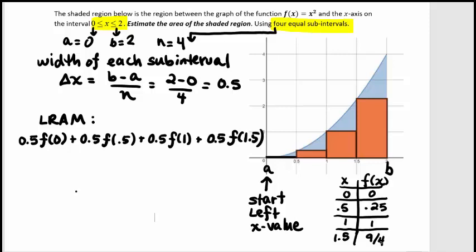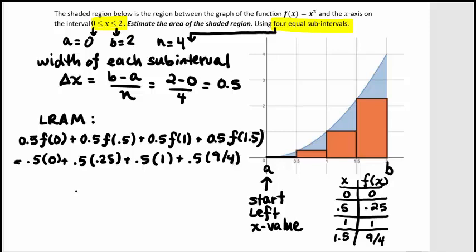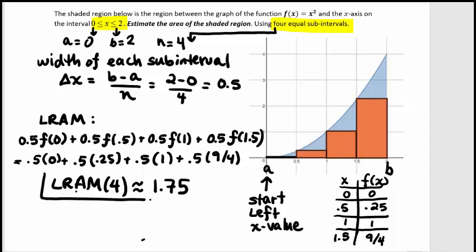Using those values in our summation, and noting that later we'll find notation to represent LRAM and RRAM in a more elegant fashion and get much better approximations than four rectangles — here we have width times height at each of those left endpoints. The approximation for four left-handed rectangles is 1.75. As you can see, it's going to be an underestimate for the actual value of the area.